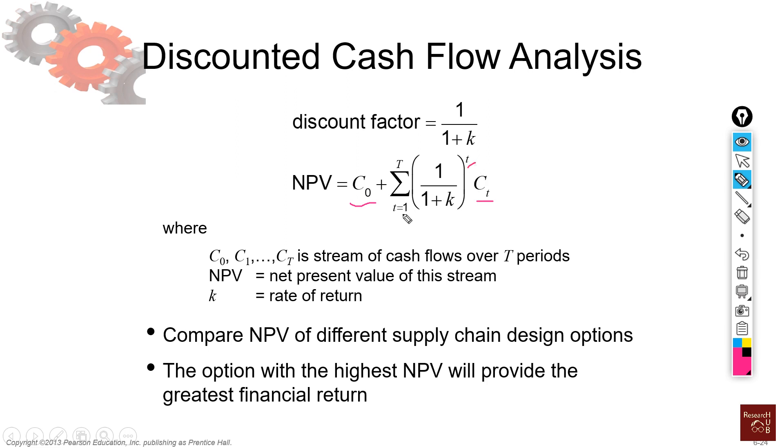So it starts from one. The next year, the cash flow of next year will have a power of one. The cash flow of the year after will have a power of two. The cash flow of the year after that will have a power of three. So it increases continuously. That's the idea of calculating net present value.